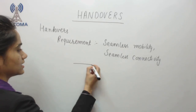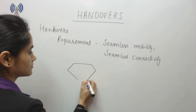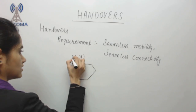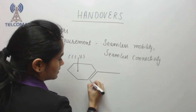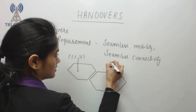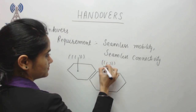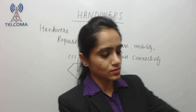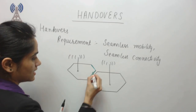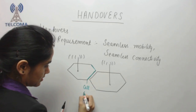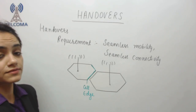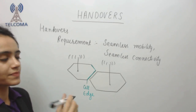To explain the concept of handovers: this is one cell and this is another cell. The boundary between them we call the cell edge. At the cell edge, the quality of the signal a device receives is not as good as at the center of the cell.